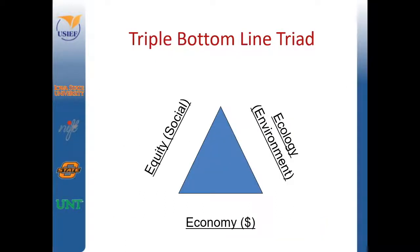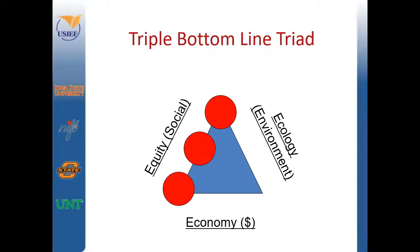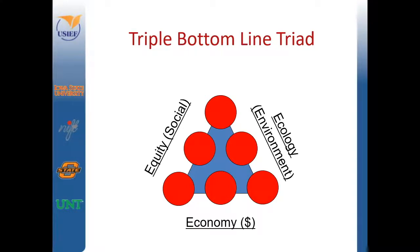Here you can see the triple bottom line triad. Along one side, we have the line of equity, which refers to social justice. On another side, we have ecology, which refers to environment and environmental well-being. On the final side, we have economy, which refers to firms' profitability and financial well-being.